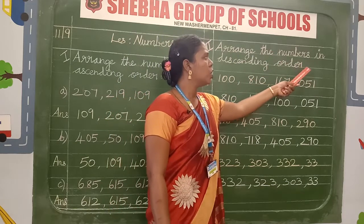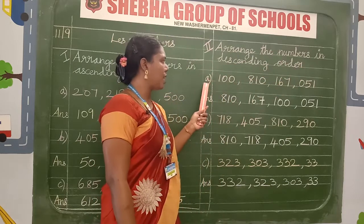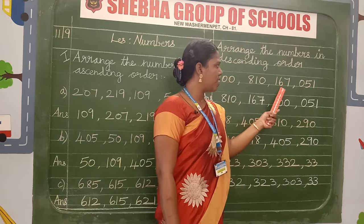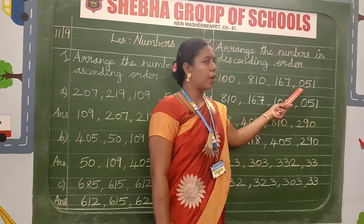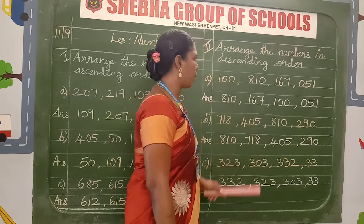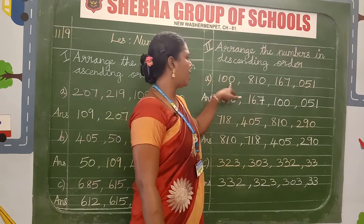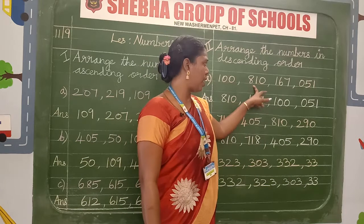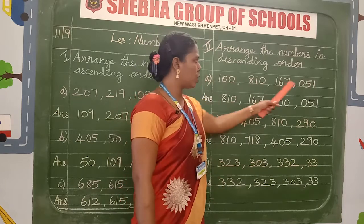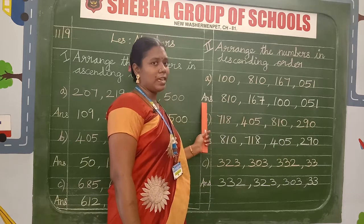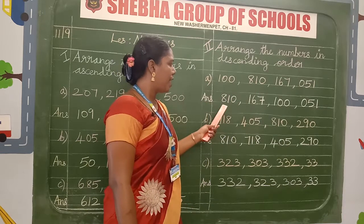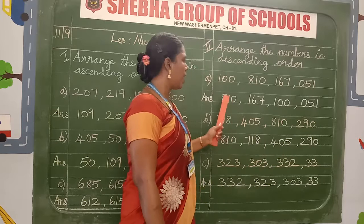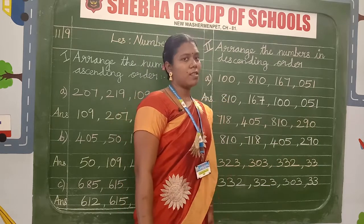After finishing the heading, leave the line and start writing the A sum. What is the question? 100, 810, 167, 51. Here you write 51 — you don't read the zero, you read only 51. That is the reading method. Give a finger gap between each number. After finishing the question, leave the line and start the answer. The answer for descending order: 810, 167, 100 and 51. Write bigger number to smaller number — this is the way of descending order.